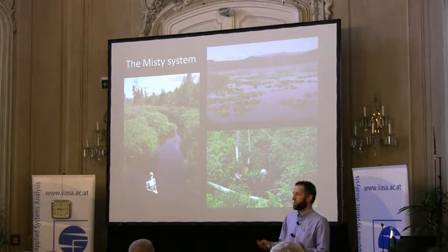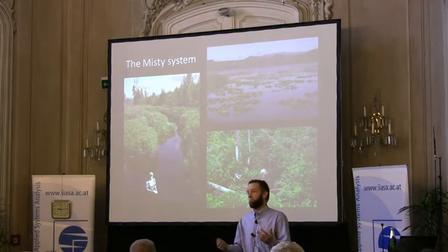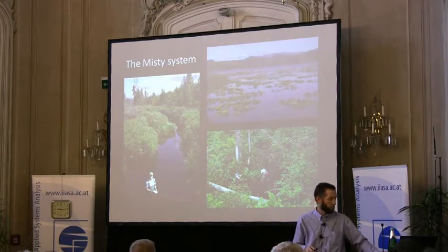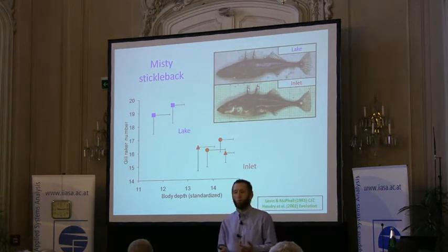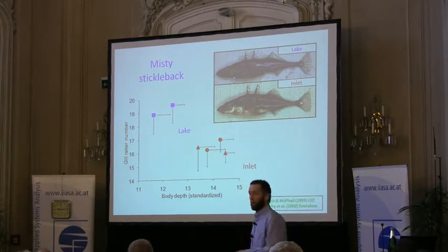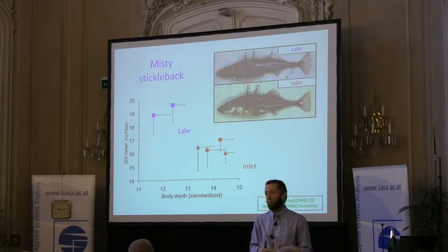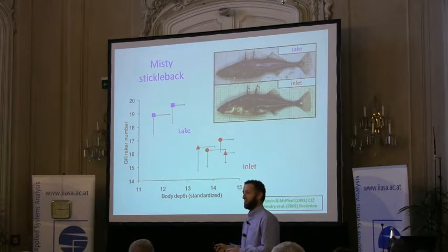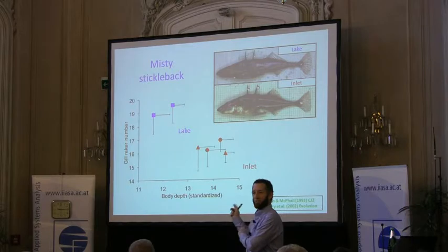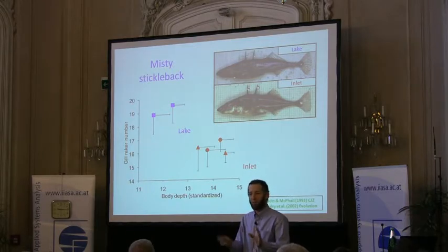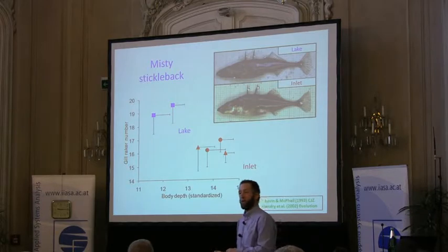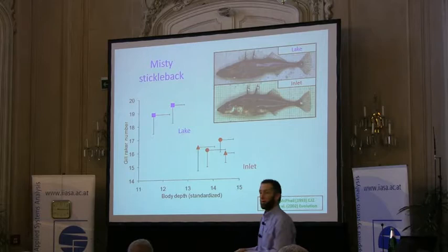The first thing we do when quantifying variation is go out and measure everything in the population and ask how traits differ - traits important for adaptation to lakes versus streams. Here are two important traits: gill raker number and body shape, specifically body depth standardized for a common body length. Here's a typical lake fish and a typical stream fish - and by typical I mean these best illustrate the difference, though to my knowledge they were actually chosen somewhat randomly.